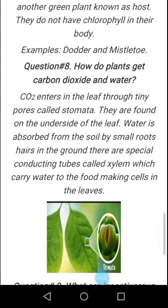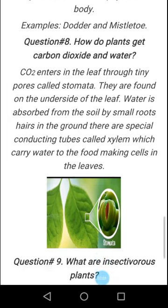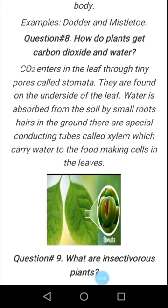Question number 8: How do plants get carbon dioxide and water? Carbon dioxide enters the leaf through tiny pores called stomata, which are found on the underside of the leaf. Water is absorbed from the soil by small roots. There are special conducting tubes called xylem which carry water to the food-making cells in the leaves.